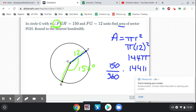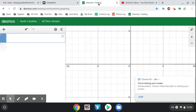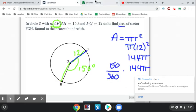Since it wants my answer to the nearest hundredth, I can go ahead and pull up my Desmos and just type that in. 150 divided by 360 times pi. I can use my pi symbol or just type in pi. And then the radius was 12.